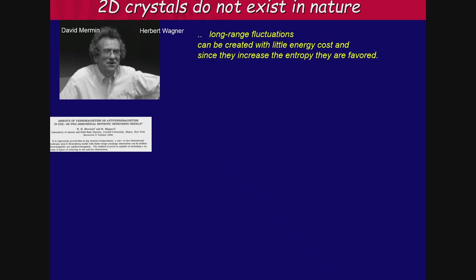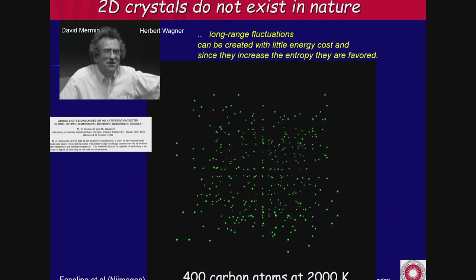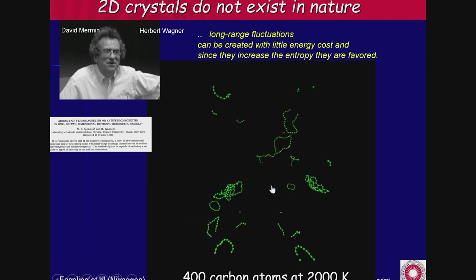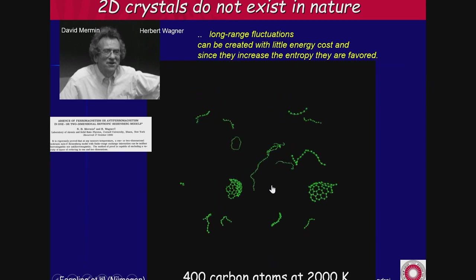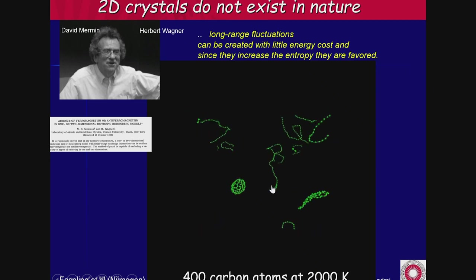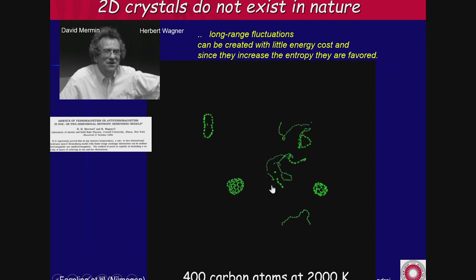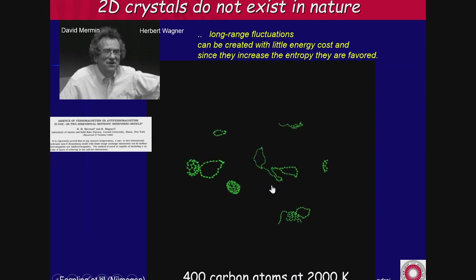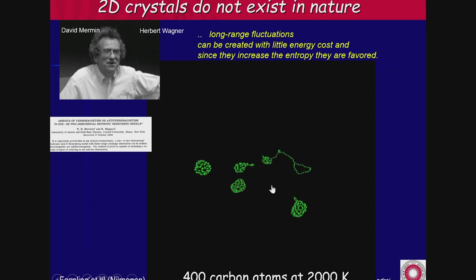Here is an illustration of why that is. We have 400 carbon atoms thrown into a cubical box, numerically heated up to 2,000 Kelvin. The atoms jiggle around; every once in a while they grab a neighbor and form a chain, and they can even form a buckyball, which is kind of stable. But no matter how long you wait, you will never get a two-dimensional surface because fluctuations out of the plane are too cheap, and those fluctuations destroy the long-range order.